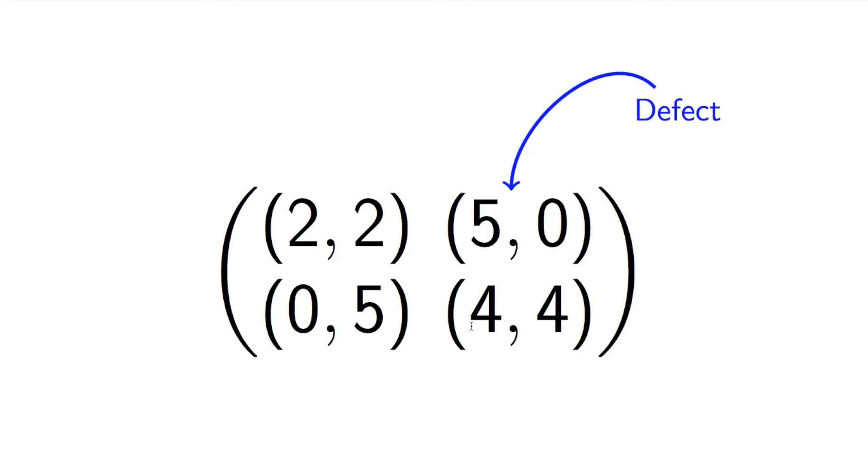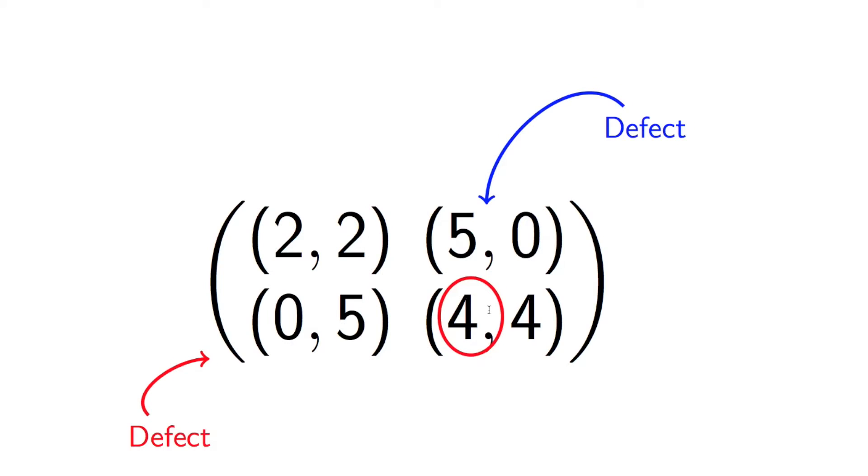So if the second player is defecting, is playing this strategy, which is called defect when you talk about this in terms of prisoner's dilemma, then what is player one's best response? Well player one is comparing five and four. Four is less than five, so player one should defect. So we're going to just mark that and remember that.